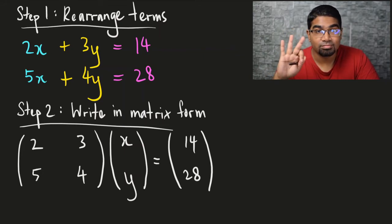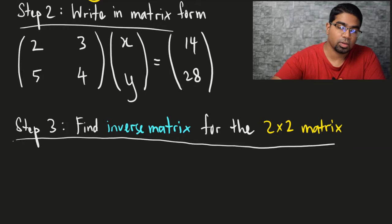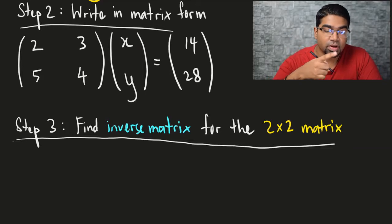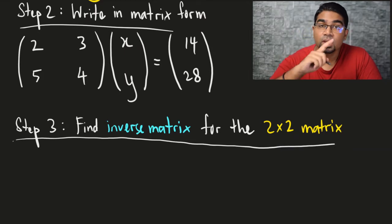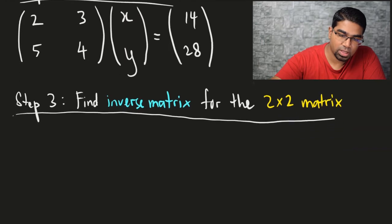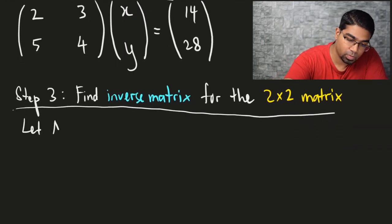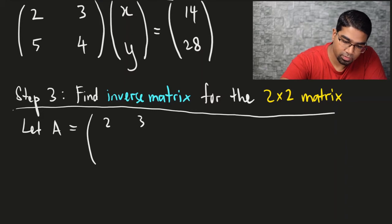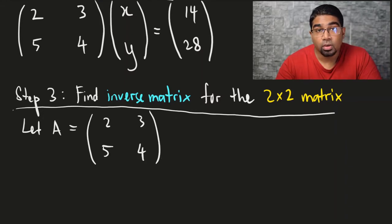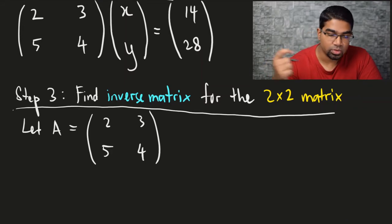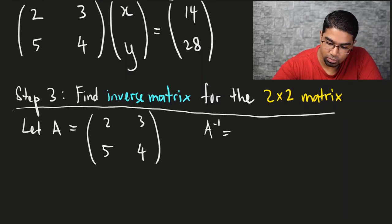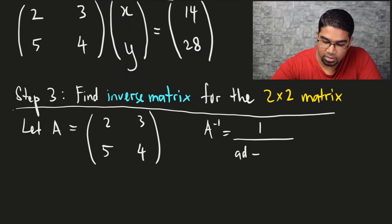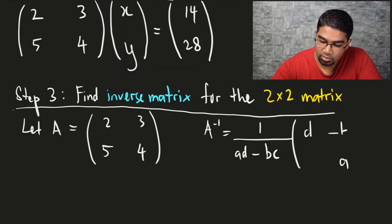Then we can go to step 3. Step 3 is where it gets a little bit longer. Step 3 is to find the inverse matrix for the 2 by 2 matrix. So if you look at our matrix form, we have the first matrix — 2, 3, 5, 4 — which is a 2 by 2 matrix, and we need to find an inverse for this matrix. First, we let A equal to the matrix [2, 3, 5, 4]. So now we want to find A inverse. When we want to find A inverse, we use the formula: A inverse equals 1 over (AD minus BC) times the matrix [D, -B, -C, A]. Most of the time this formula will be given to you.